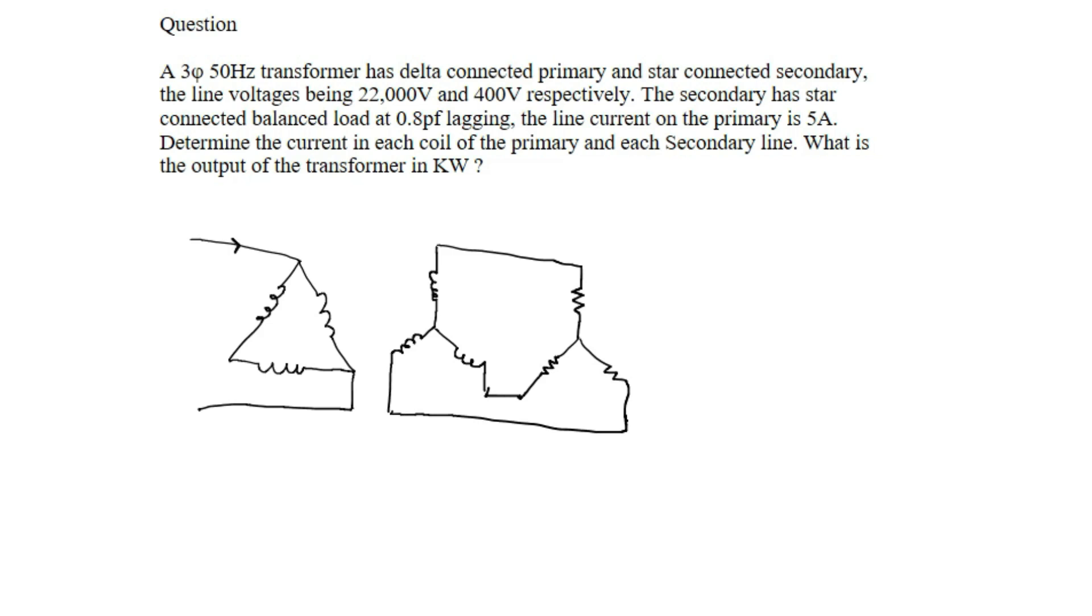The primary current is 5 amperes. Determine the current in each coil of the primary and each secondary line. What is the output of the transformer in kilowatts?